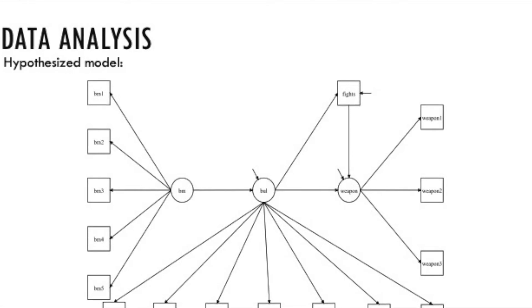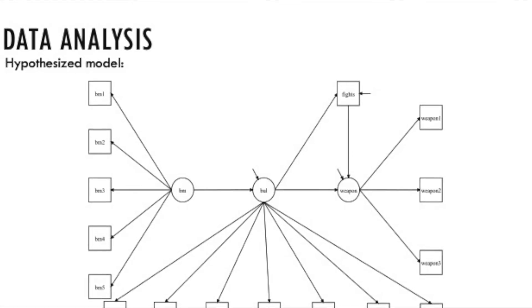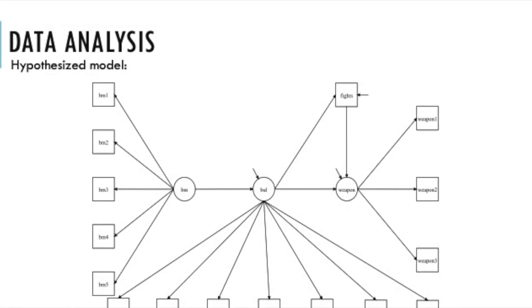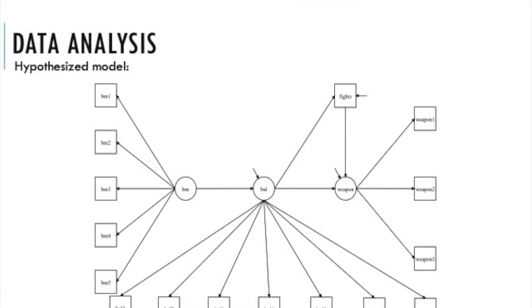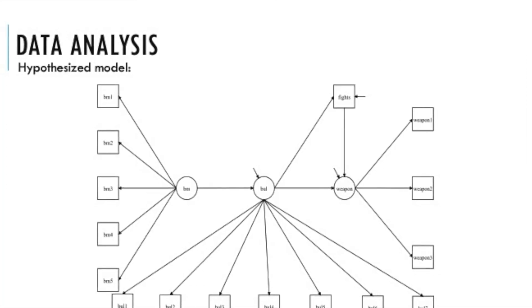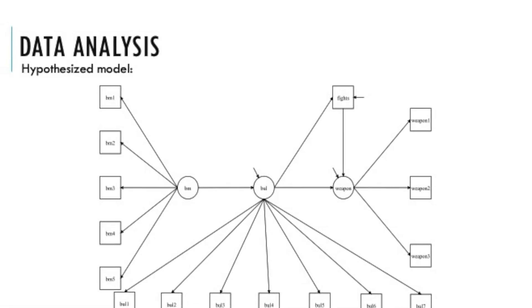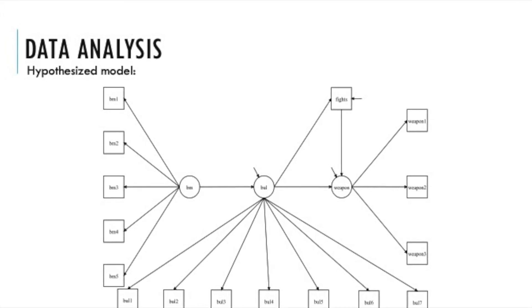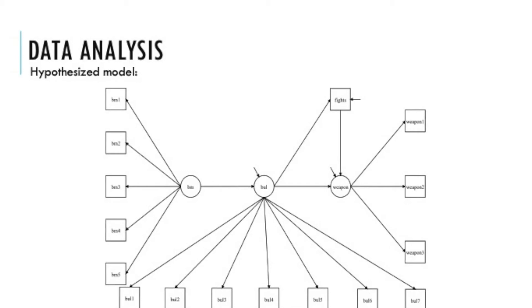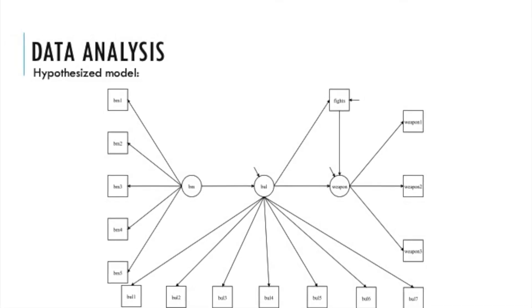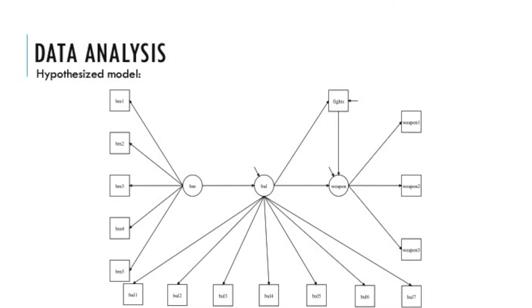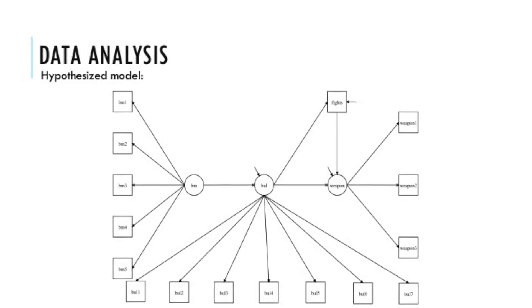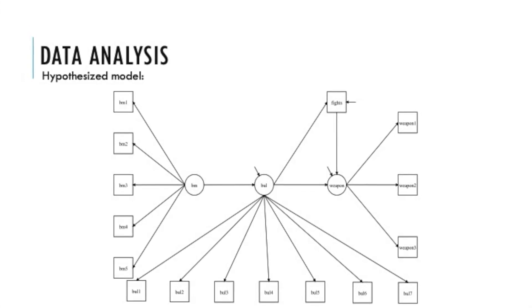As indicated in this figure, the hypothesized model included three latent variables: behavior management, bullying victimization, and weapon carrying. The fights observed variable was specified as an outcome of the bullying latent variable and a covariate of weapon carrying. The relationships specified in the model are based on the hypothesis that more effective behavior management at school, the BM variable, predicts less bullying victimization, the BUL variable, which in turn predicts fewer engagements in physical fights, the fights variable, and less weapon carrying at school, the weapon variable.